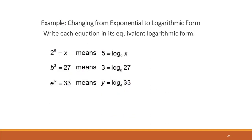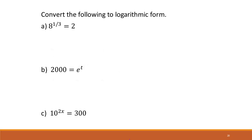Just like we can go from logarithmic form to exponential form, we can go from exponential form to logarithmic form using the same rule. So if we have 8 to the 1/3 equals 2, that means our base from the exponent is our base for our log, our solution is what we're taking the log of, and our exponent is our new solution.